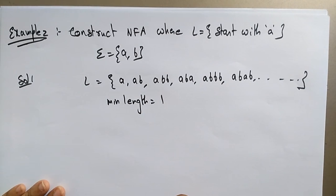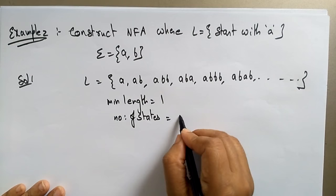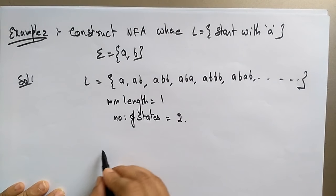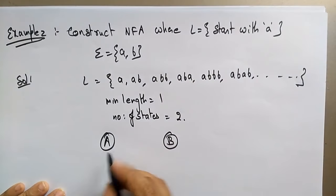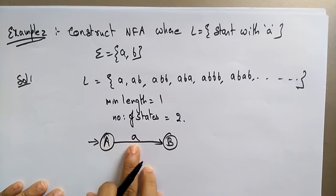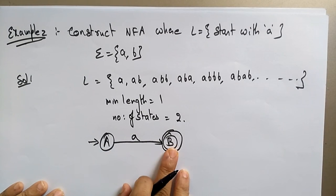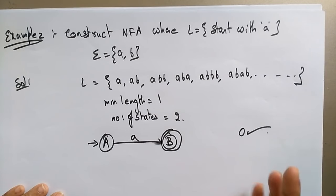The number of states should be minimum length plus one, giving us two states. Let me take states a and b. The string starts with a, so state a on input a goes to state b, which is the final state. A on a goes to b — the next state is the final state, so the string 'a' is accepted.